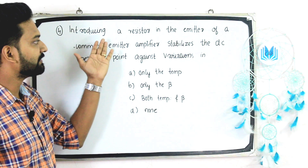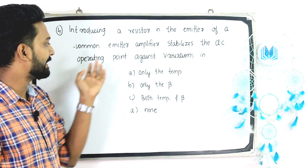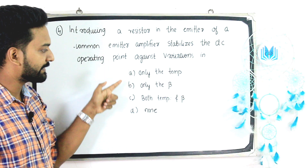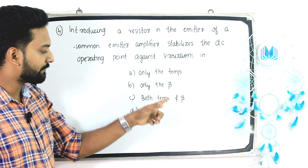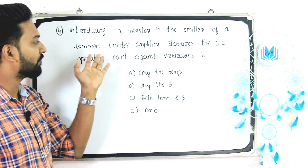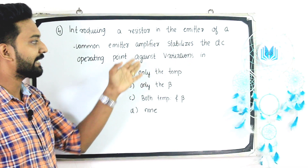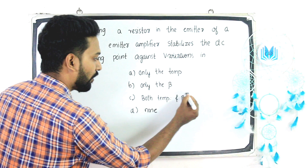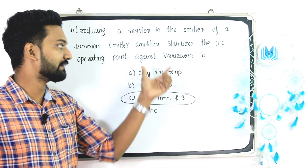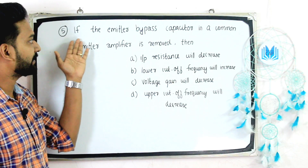Question 4: Introducing a resistor in the emitter of a common emitter amplifier stabilizes the DC operating point against variations in — only the temperature, only the beta, both the temperature and beta, or none. The answer is option C: both the temperature and beta.